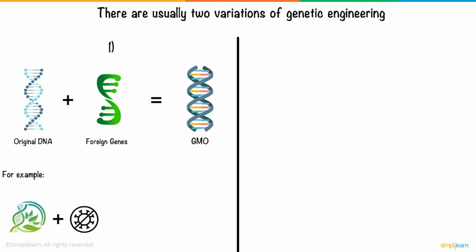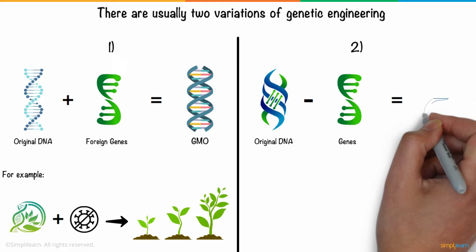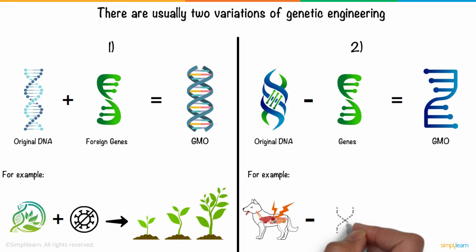The second type features the removal of certain genes from a DNA structure to eliminate certain behavior or characteristics that may be unwanted in the GMO. For example, removing a particular gene or enzyme from a species reduces its chances of falling prey to cancerous tumors.